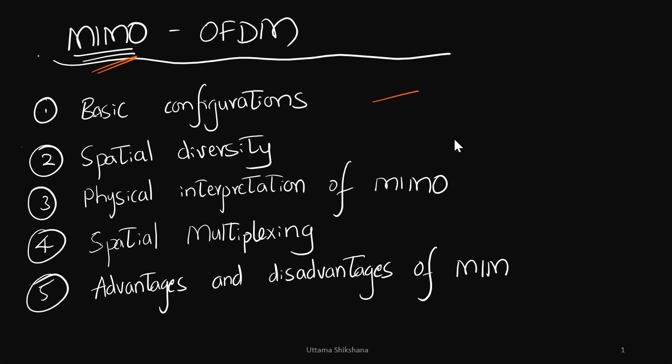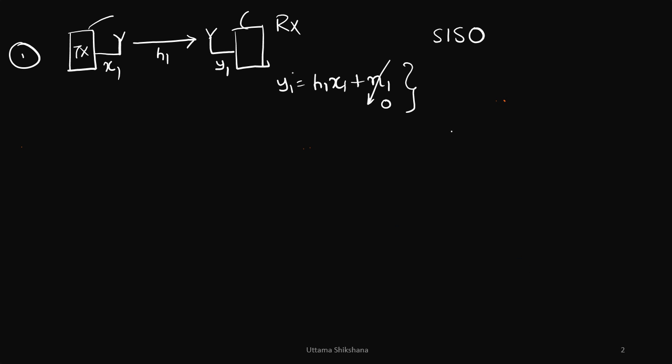In this video I want to talk about various topics. First I want to cover the basic configurations, then we will talk about spatial diversity and spatial multiplexing, then I will enter into the physical interpretation of MIMO, and then we will see merits and demerits of MIMO.